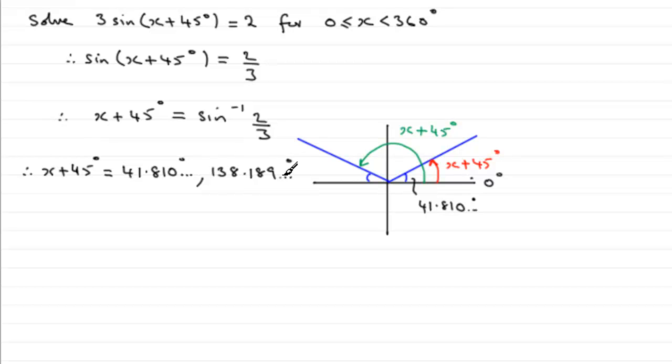But it doesn't end there because in a moment we're going to be subtracting 45 degrees from both of these answers. This one will be a negative angle, out of bounds, out of range. This one will be okay when we subtract 45 degrees, but we would need to get another one. And the next one is to turn from here 360 degrees and then do this extra 41.810 degrees.